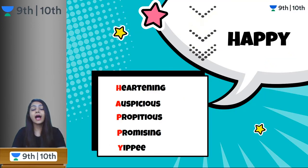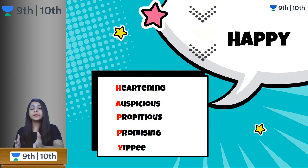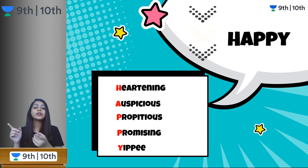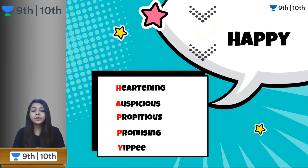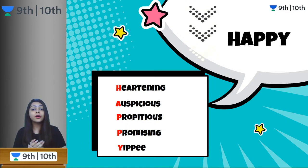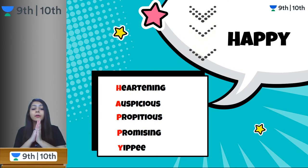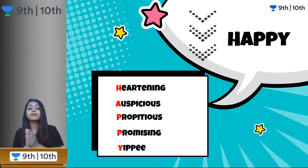Next word is HAPPY. When you are experiencing a happy situation, you would give it a synonym. H for heartening — something that literally warms your heart. A for auspicious — something that brings you good luck and good omens, an important and happy occasion. P for propitious — just like auspicious, indicating luck. And the next P is promising — an event which is promising in your life will bring you happiness.